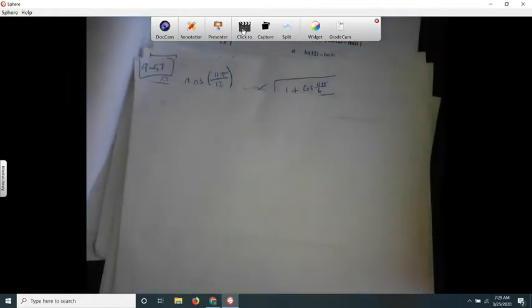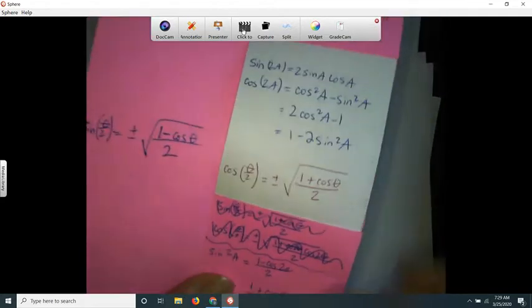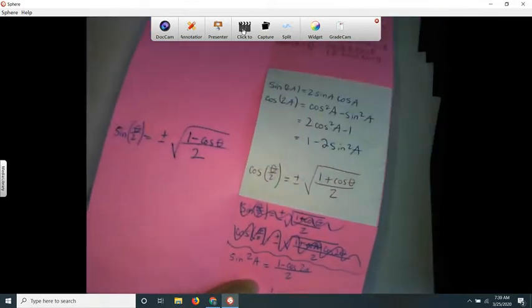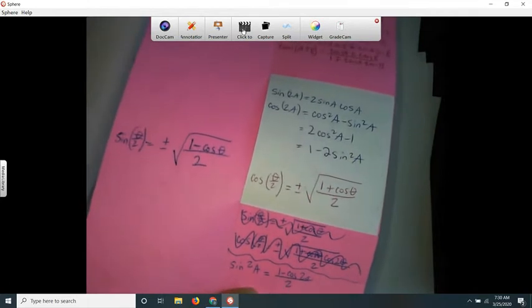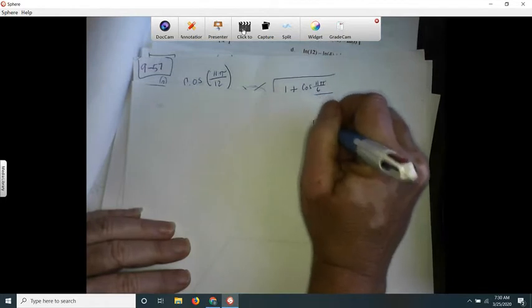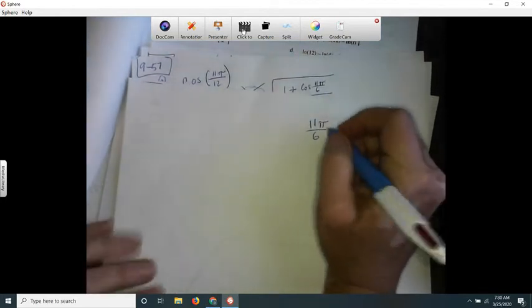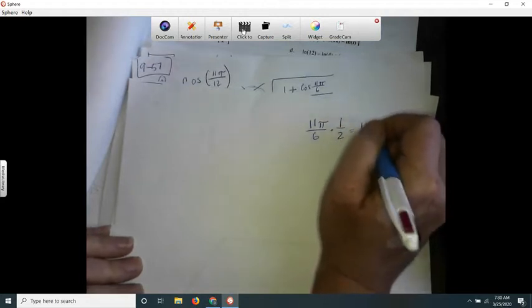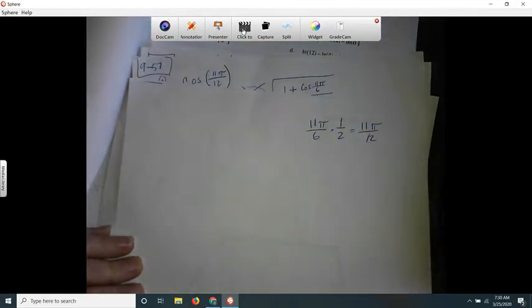So I want to use my half angle identity. So I don't know if that makes sense. My half angle identity is, see, if I take 11π over six and divide it by two, what is that? 11π over six? Well, I can't, I don't want to divide it by two. I want to times it by a half, which is the same thing. Doesn't that give me 11π over 12? So that's why I know that I can use this. Okay, so that's what I'm going to use.